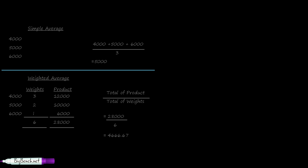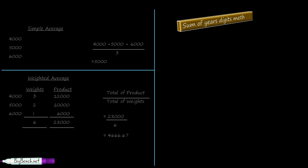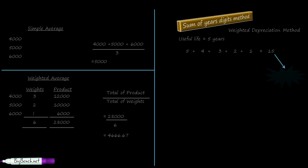We are discussing this in the chapter of depreciation because the Sum of Years Digit method is essentially a weighted depreciation method. We simply apply weights to the amount of depreciation; the weights keep changing every year and therefore the amount of depreciation is different for each year. For an asset with a useful life of 5 years, the year digits are 5, 4, 3, 2 and 1. The sum of these digits — 5+4+3+2+1 = 15 — is called the SYD factor, which is the total of weights.